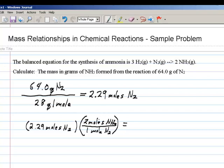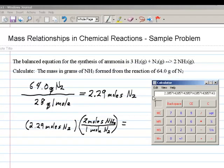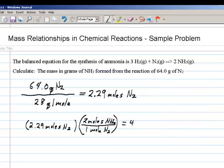So, that's basically just 2 times 2.29. I should be able to do that in my head, but it's amazing how that ability goes away over time. 2.29 times 2 is 4.58 moles of ammonia. Do our units work out? Well, moles of nitrogen over moles of nitrogen cancels, and we're left with moles of ammonia. Cool. All right.